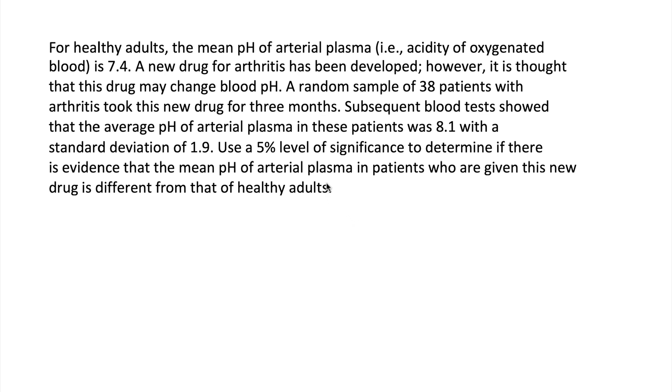So that's a lot to take in at one time. Let's go through and point out some things that are important. First of all, in the first sentence, we're given the variable that we're working with. It's the pH of arterial plasma. And we're told that for healthy adults, the average is 7.4. Then we're told that we have a drug that has been developed and they give this drug to a sample of 38 patients. So that 38 is the size of our sample, which we use an n to talk about.